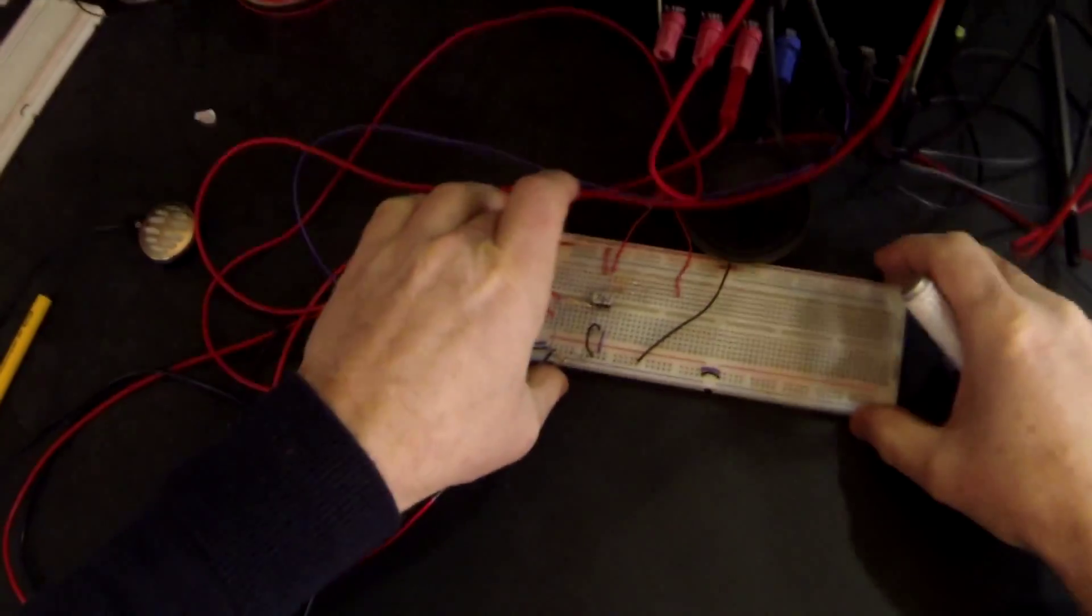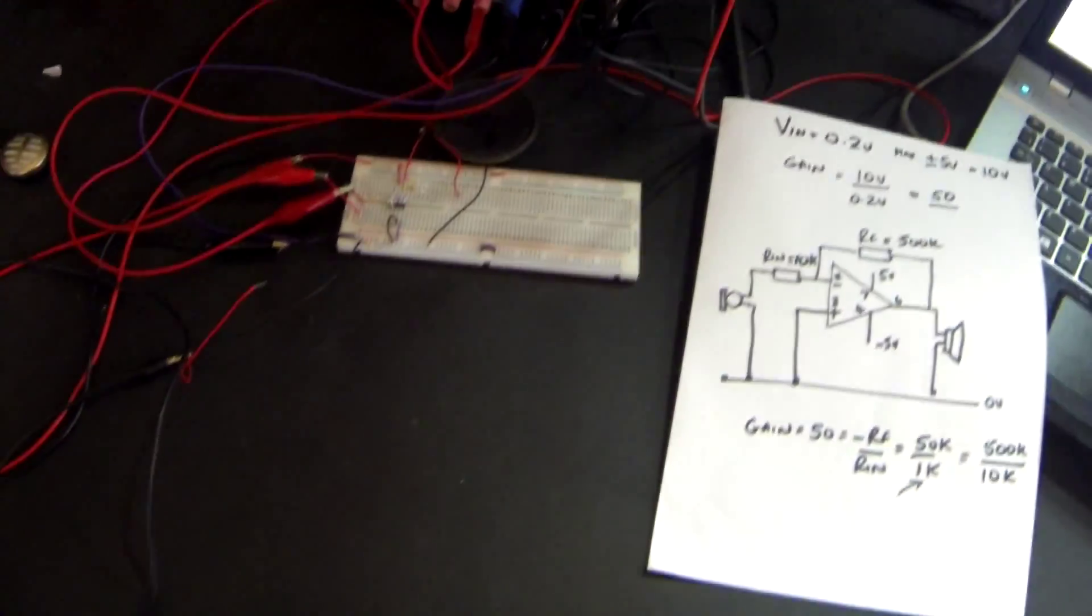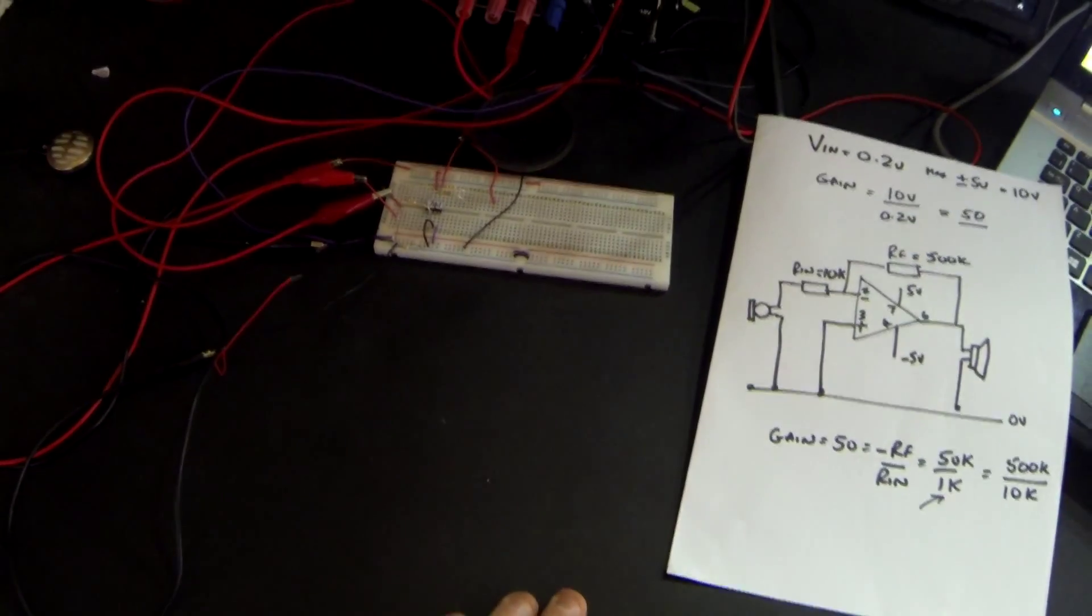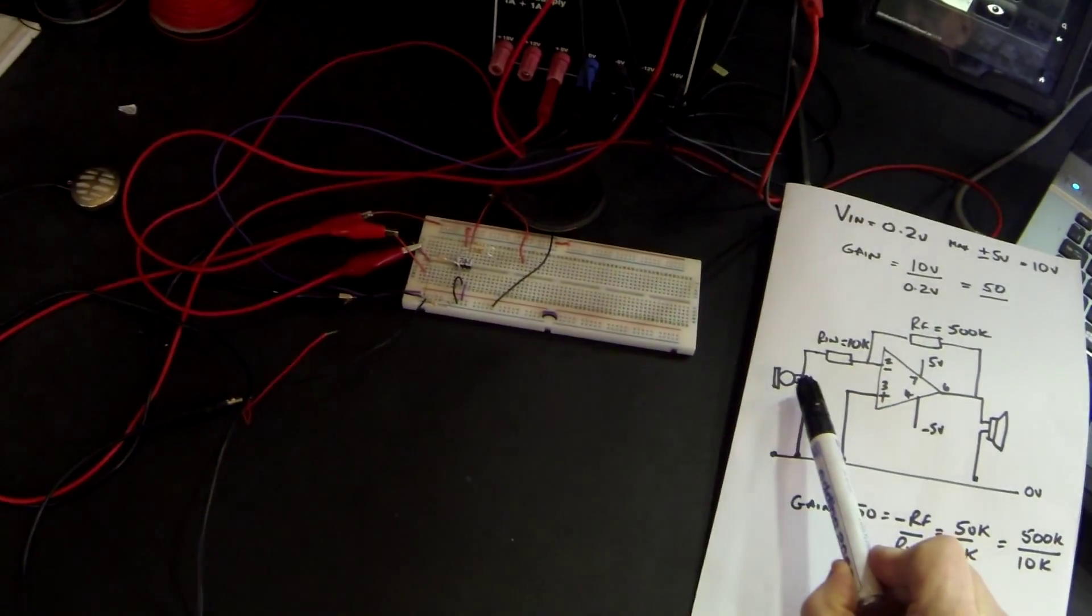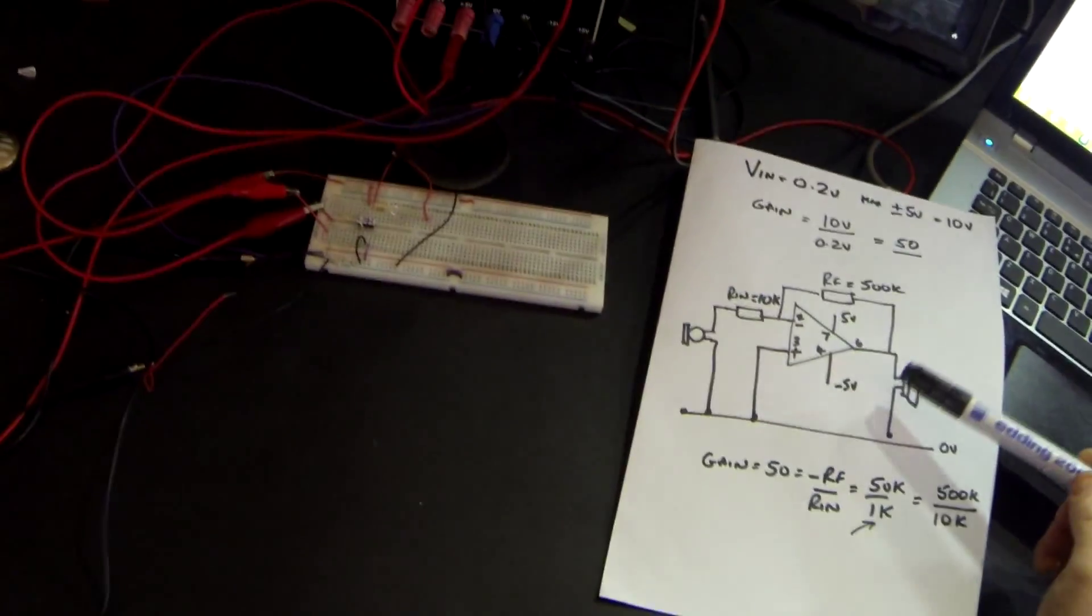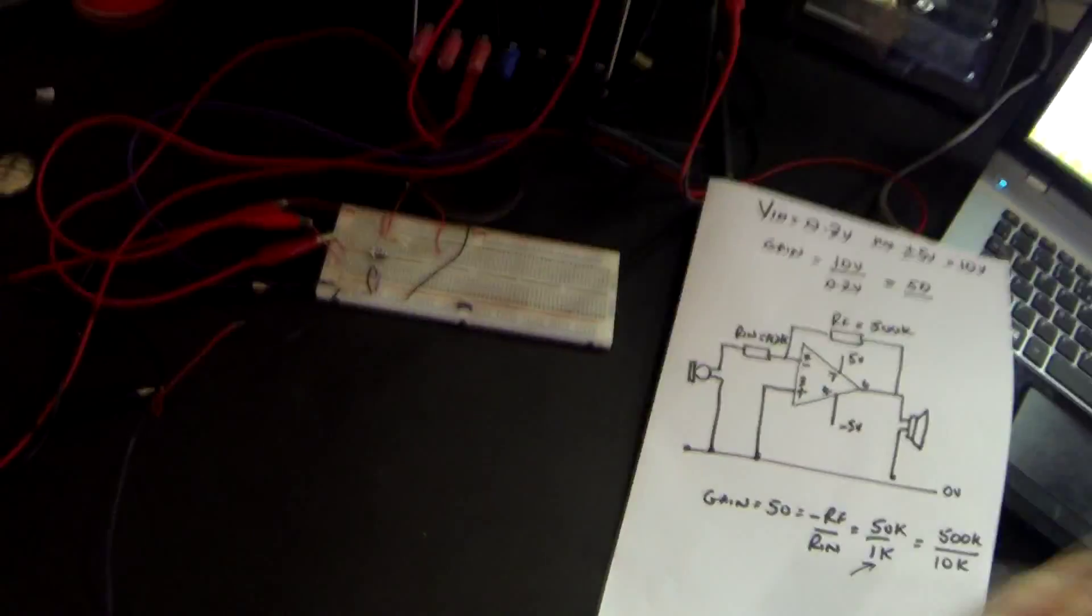So here is my circuit. So what I've done, I've connected up, instead of the microphone at the moment, I've connected up a frequency generator to replicate a microphone signal. And at the output I'm going to look at it on an oscilloscope. So we're going to look at the input and look at the output to start with.